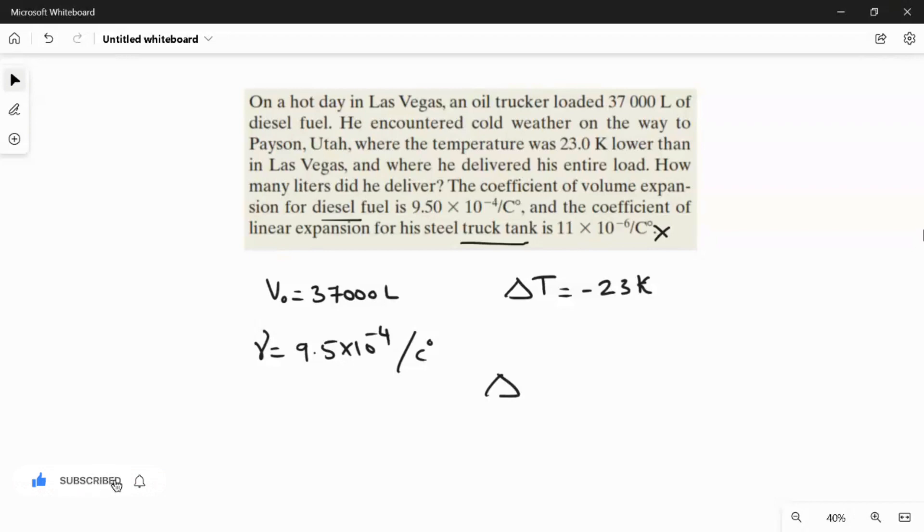Now I'm going to write the formula: ΔV = γV₀ΔT. So gamma value is 9.5 × 10⁻⁴ multiplied with V₀, which is 37,000, multiplied with the change in temperature, minus 23 Kelvin.